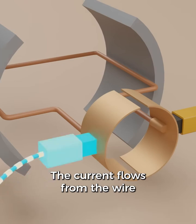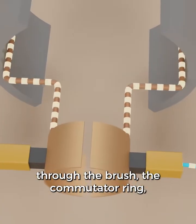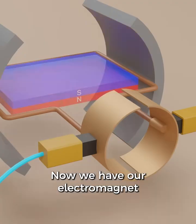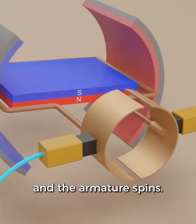The current flows from the wire through the brush, the commutator ring, the armature loop and back through the other side. Now we have our electromagnet and the armature spins.